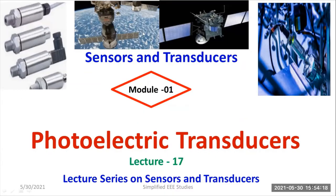First of all, I will take you through these diagrams. These diagrams are related to the part of spacecraft vehicles. You can see this kind of solar panel and the main body of the spacecraft vehicle. Here we are going to use this kind of photoelectric transducers. This image has been taken from the website of NASA. So in this context, I would like to inform you about the importance of photoelectric transducers, mainly focusing in the area of spacecraft vehicles.